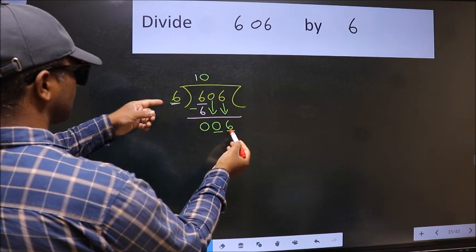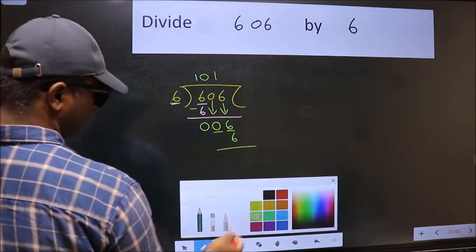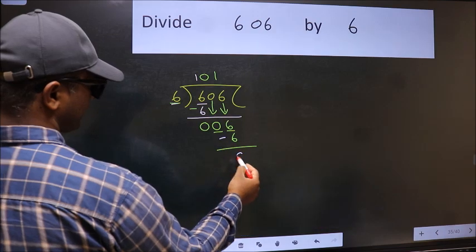Now 6. When do we get 6 in the 6 table? 6 once is 6. Now we should subtract. We get 0.